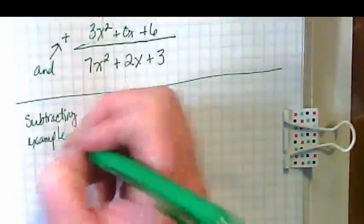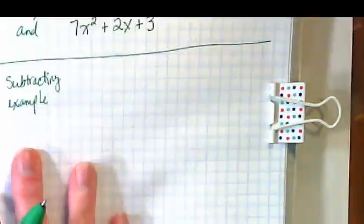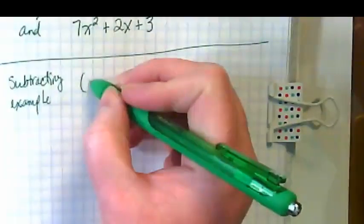At this point when we are adding and subtracting polynomials it really is just like a fancier version of combining like terms. Please write down this example.